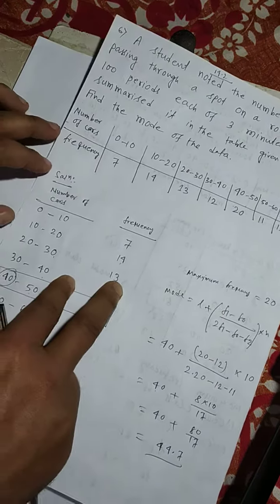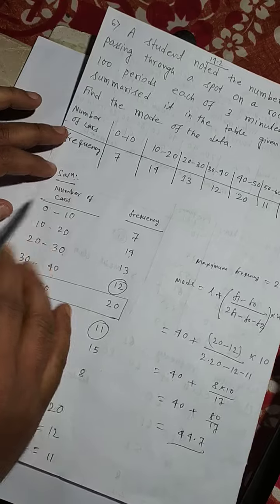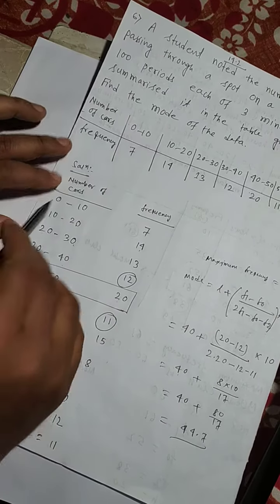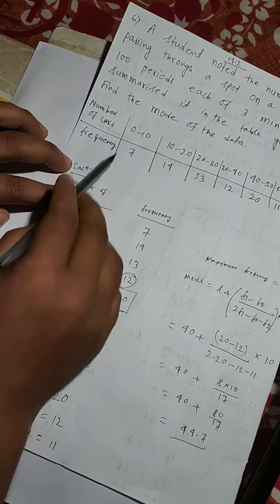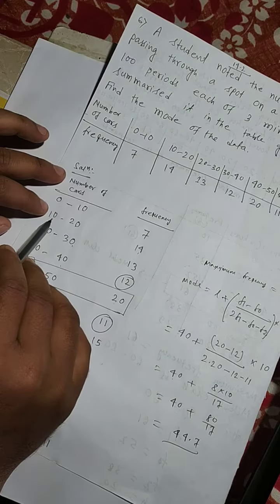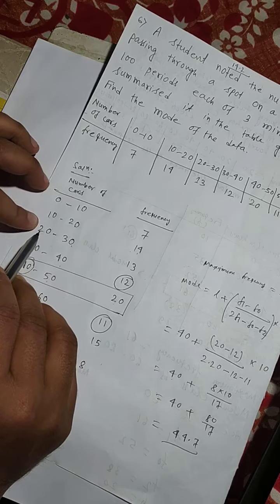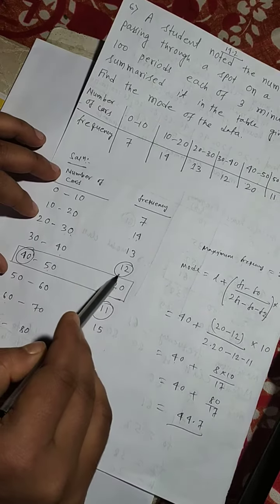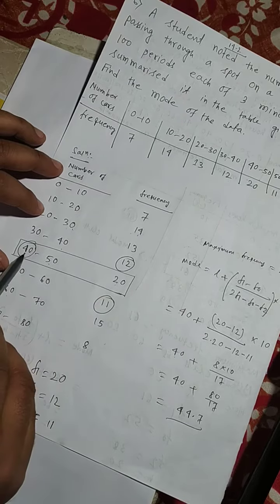So, now solution. Here number of cars and frequency: 0 to 10 frequency 7, 10 to 20 frequency is 14, 20 to 30 frequency is 13, 30 to 40 frequency is 12, 40 to 50 frequency is 20.